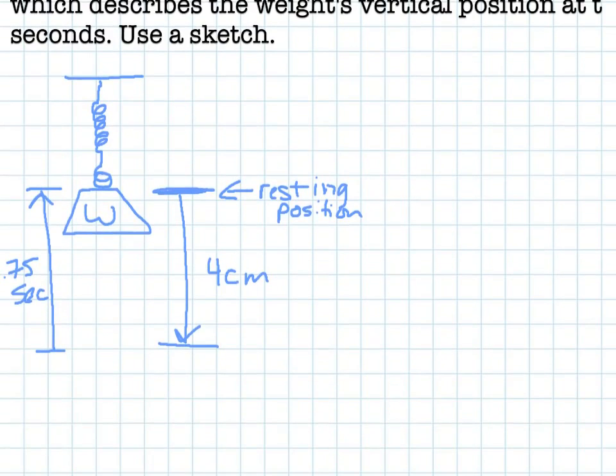Here, first I like to draw a picture. So here's my spring and my weight at resting position. I pull it down 4 centimeters and then release. It takes the weight 0.75 seconds to get back to resting position.